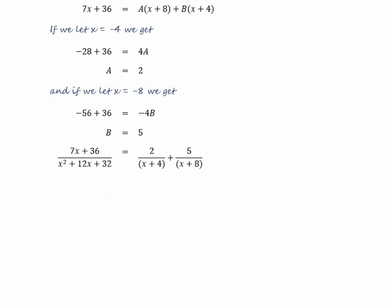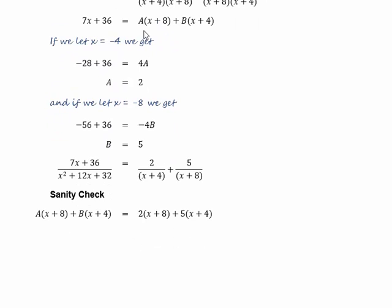As usual, we'll want to do a sanity check. We'll put A and B into this expression here. So we have 2x plus 5x, which is 7x. We've got 2 times 8 is 16, 5 times 4 is 20. 20 plus 16 is 36. And this expression is the same as this expression.